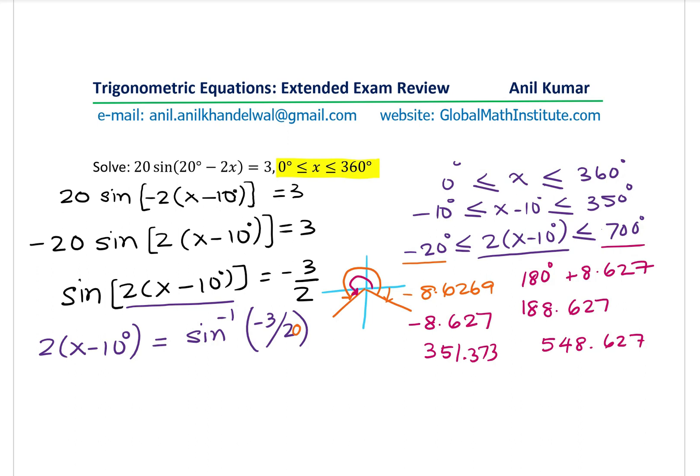So we can now write that the solution for this equation is 2(x-10°) equal to these four: -8.627, 188.627, 351.373, and 548.627. So x minus 10 degrees is equal to divide them each by two. -8.627 divided by two gives you minus 4.3135. And 188.627 divided by two gives you 94.313.